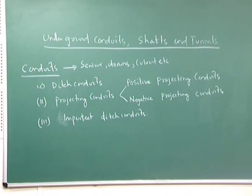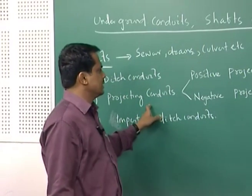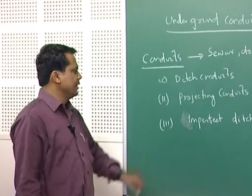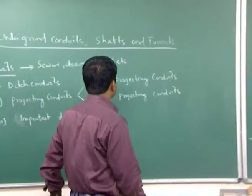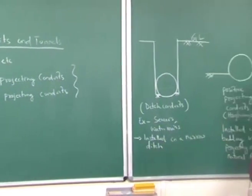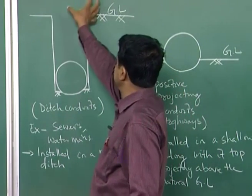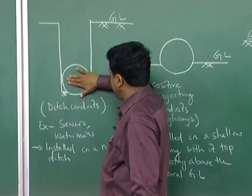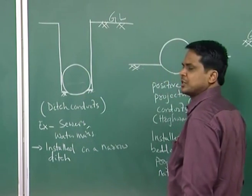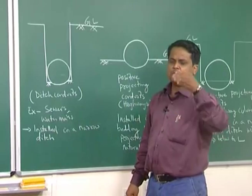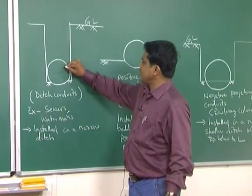The classification includes ditch conduits and projecting conduits — these two types are widely used. The projecting conduits have two sub-types: positive projecting conduits and negative projecting conduits. The third, which is a special type, is called imperfect ditch conduits, which we will discuss later. We are concentrating on ditch conduits and projecting conduits. A ditch conduit means a narrow ditch has been excavated below the ground surface and a conduit installed within it — the best example being sewer lines or water main pipelines going far below the ground surface.